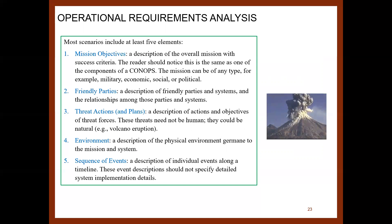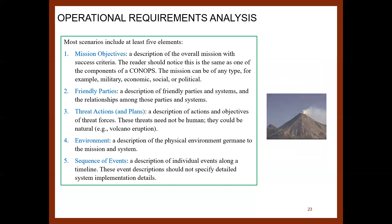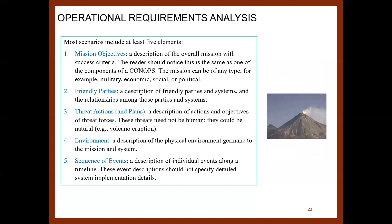The second element is the friendly parties — a description of friendly parties and systems and the relationships among them. Third are the threat actions and plans, which is a description of actions and objectives of threat forces. These threats need not be human; they could be natural, like a volcano eruption. Fourth, the environment is a description of the physical environment germane to the mission. Fifth, the sequence of events is a description of individual events along a timeline, and this description should not specify detailed system implementation details.